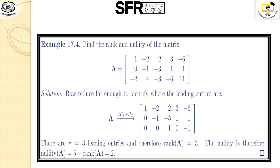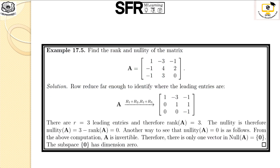One more example — finding rank and nullity of a 3×3 matrix. By converting the given matrix using row reduction, we obtain the upper triangular matrix with entries 1, −3, −1 / 0, 1, 1 / 0, 0, −1. The leading non-zero entries are 1, 1, −1, so its rank is 3 and the dimension is 3. Therefore nullity equals 3 minus 3, which equals 0. The nullity is singleton {0}, whose basis is the empty set. The dimension of this singleton zero is 0 because the number of elements in its basis collection is 0.